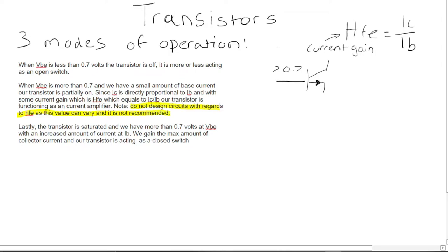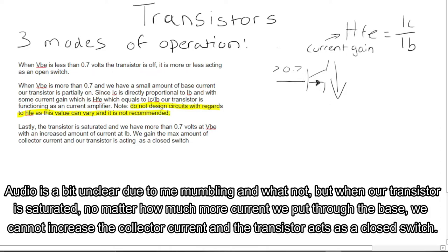And lastly, the transistor is saturated. We have more than 0.7 volts at VBE with increased amount of current IB. We gain the max amount of collector current with the transistor acting as a closed switch. This is the max amount our collector can do. It doesn't matter how much more we pump through it. It's letting in as much as possible already.